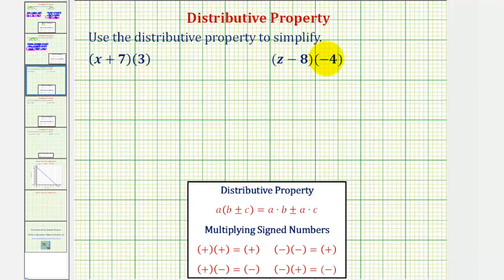We want to use the distributive property to simplify the given expressions. The distributive property is given here below, where we have a times the quantity b plus or minus c equals a times b plus or minus a times c.